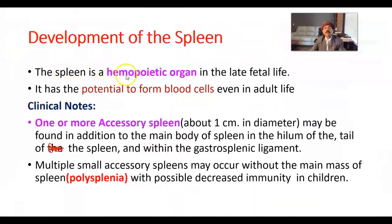The spleen is a hemopoietic organ, meaning it has the capacity to produce blood cells in late fetal life. It has the potential to form blood cells even in adult life, as seen in severe anemia and in some types of leukemia or blood dyscrasias. In those situations, the spleen retains the capacity to produce blood cells in the adult person.